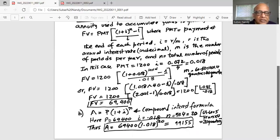So basically it is 69,400 multiplied by in parenthesis 1 plus I which is 1.018 to the power of N is 20, 5 years, 4 quarters, 5 times 4 is 20. And if we crank out the numbers in our calculator it will be $99,155.